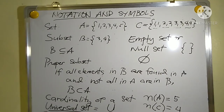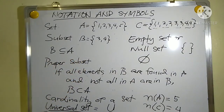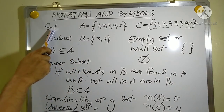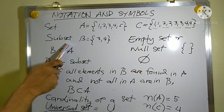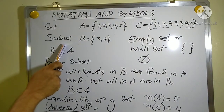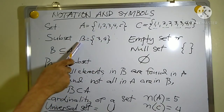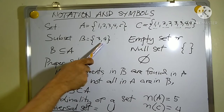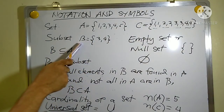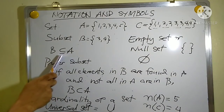Now let us continue on notations and symbols. Let's go back to set again — a set is denoted by the letters of the alphabet. We also have subset. For a subset, we take elements in A; say you want to get three and four, and we call that set B whose elements are three and four. To write the subset B in relation to A, we say that B is a subset of A. This is the symbol for subset.